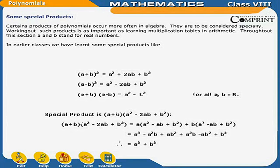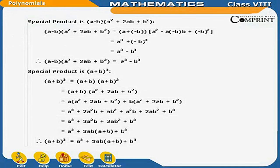Special product: (A+B)(A²−AB+B²) = A(A²−AB+B²) + B(A²−AB+B²) = A³−A²B+AB² + A²B−AB²+B³ = A³+B³. Also, (A−B)(A²+AB+B²): substituting minus B for B gives (A+(−B))(A²−A(−B)+(−B)²) = A³+(−B)³ = A³−B³.